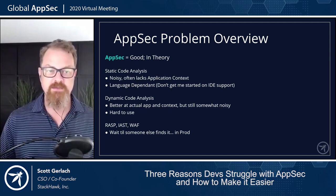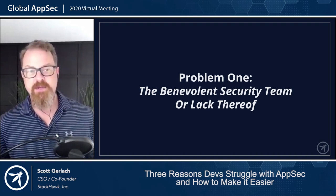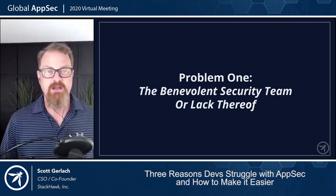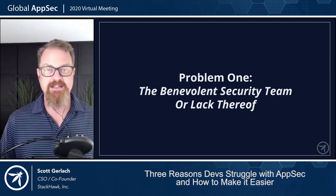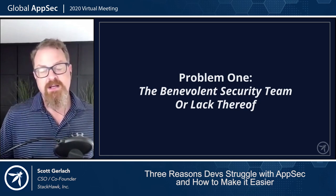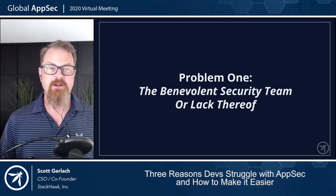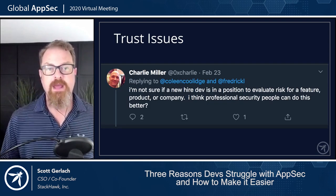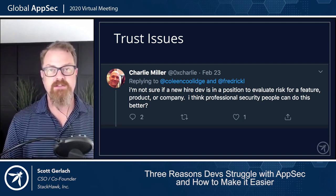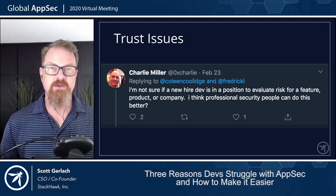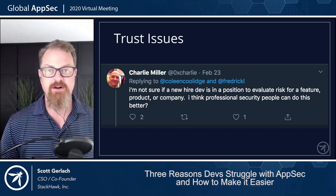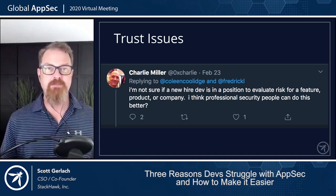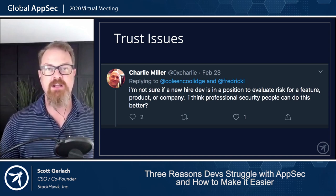So let's start talking about some of these problems. Problem one: the benevolent security team, or lack thereof. Some organizations don't even have a security team. I'm assuming most people at this OWASP conference are on a security team, but maybe looking forward to how to grow that. We have a lot of trust issues as security organizations. This is a tweet that Charlie Miller sent out in February right before coronavirus hit us pretty hard. I love this tweet because he sums up this whole trust issue thing that we have as security teams.